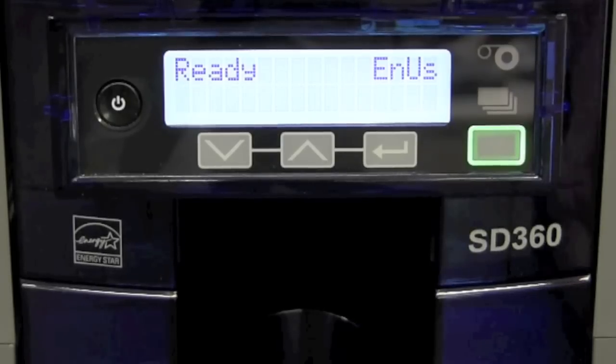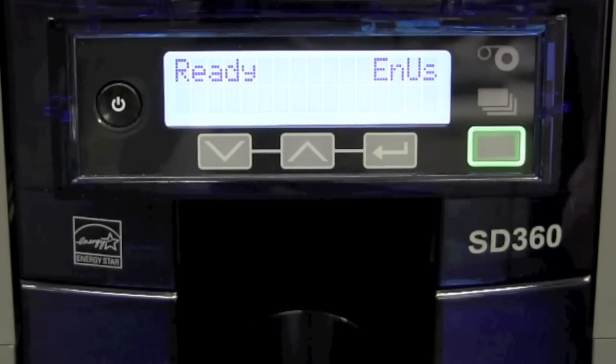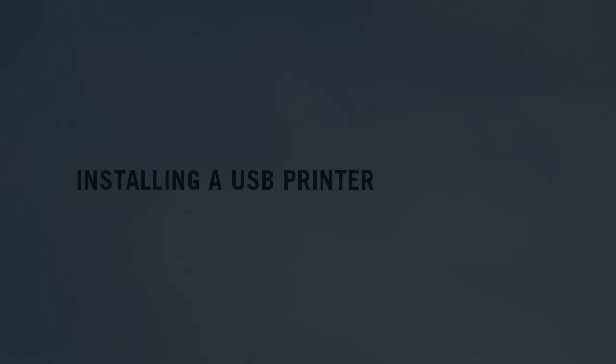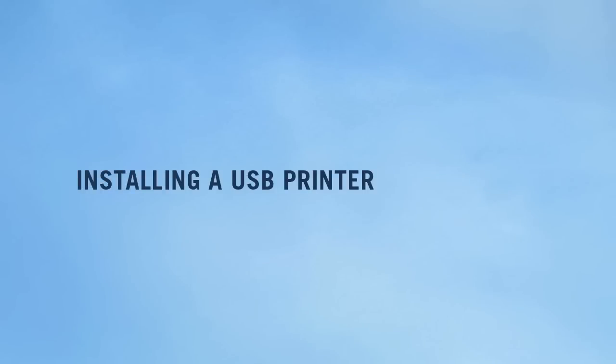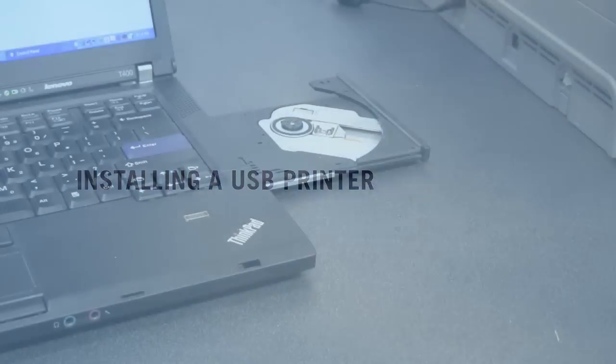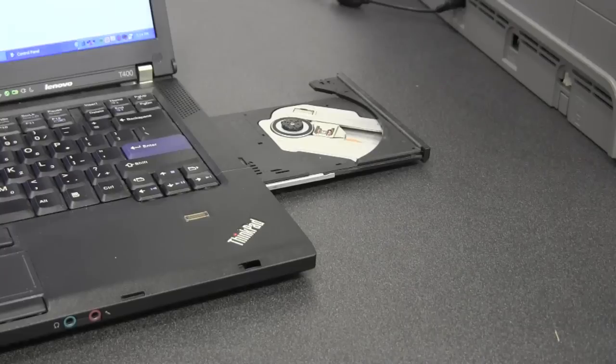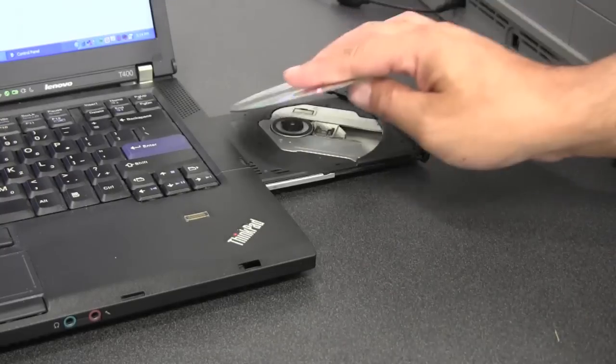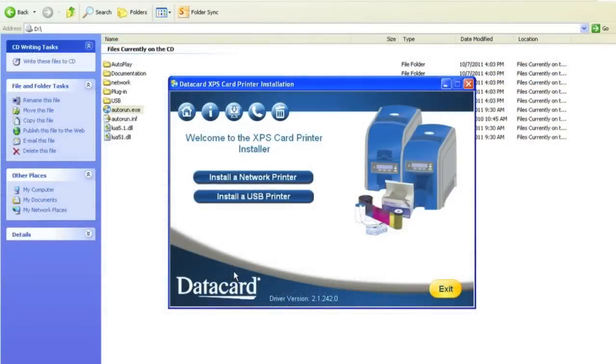Once the printer is powered on, wait a few minutes until the printer is in the ready state. To operate the printer, you need to install the printer driver. Take the driver's CD and place it in your computer. There are two ways to set up the printer using the USB or the network.